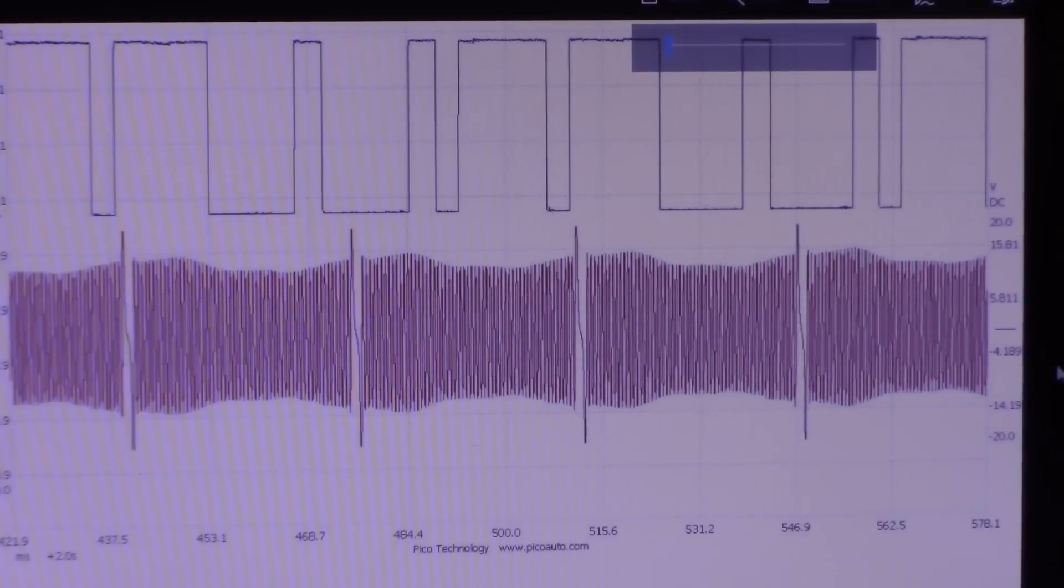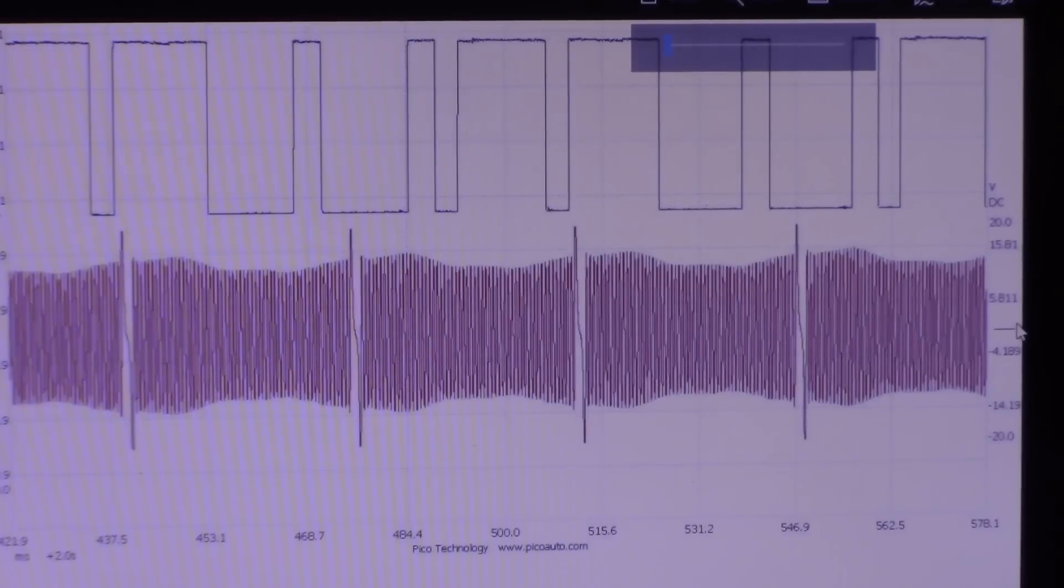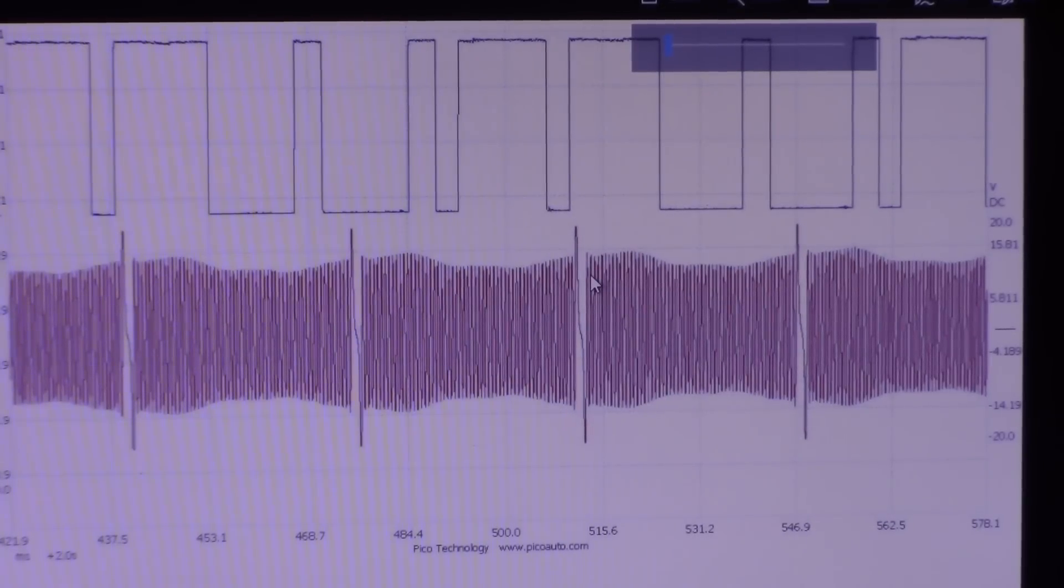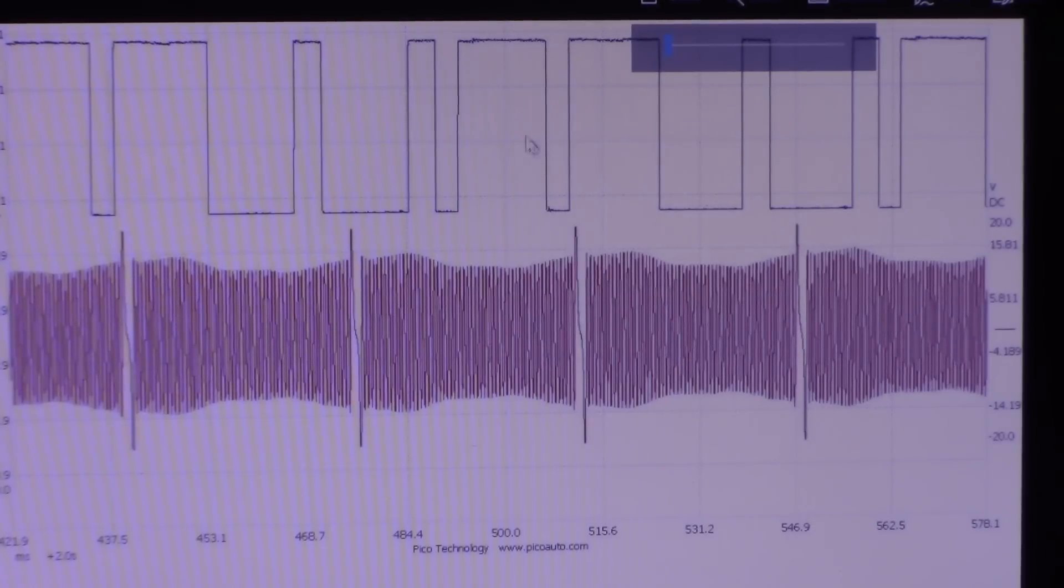All right, so here is the known good waveform that I got from IATN. So we have the same cam signal, the two big teeth, two small teeth, and then there would be two bigger teeth on this side. But the waveform was just cut off. But all we need is 720.